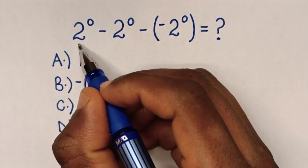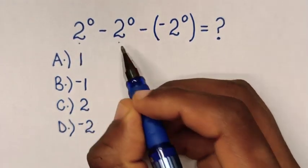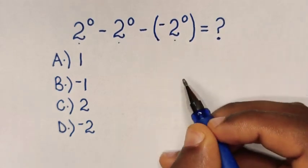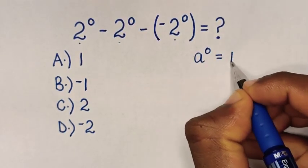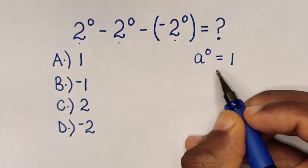So, from here 2^0, 2^0, and this 2^0, we will apply the rule that a^0 = 1, because any number to the power of 0 is equal to 1.